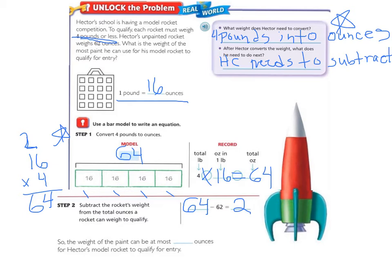And we used 64 minus 62 because we just found in step 1 that 64 ounces is the total ounces a rocket can weigh to qualify. And Hector's rocket already weighs 62 ounces. So the weight of the paint can be at most 2 ounces for Hector's model rocket to qualify for entry.